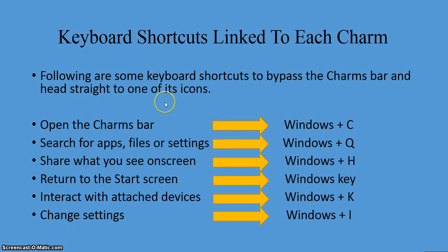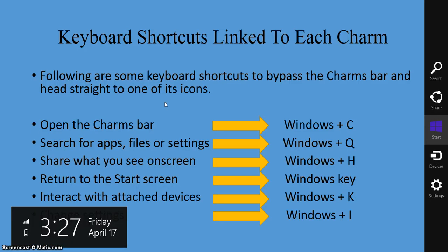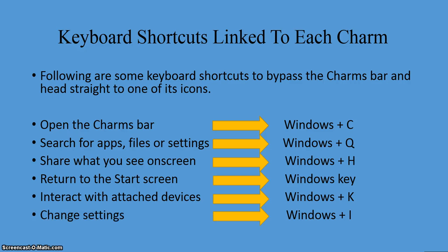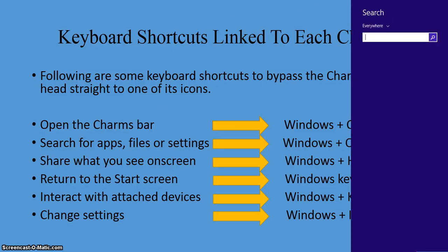Now, by using your keyboard you can totally bypass bringing up the charms bar and go directly to a particular function. To open up the charms bar, the keyboard shortcut is the Windows key plus the C key. If you want to search for apps, files, or settings, press the Windows key plus the Q key — and that's what comes up here.